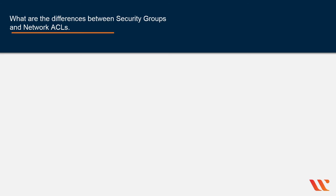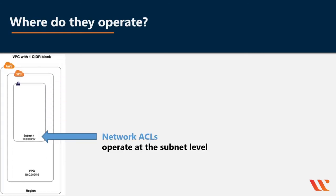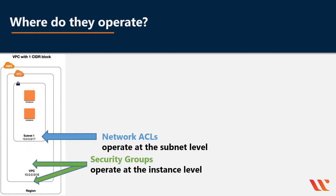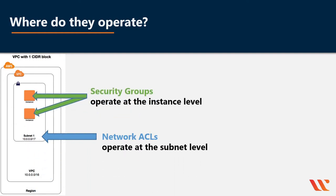The first thing to get firmly in your mind is where these virtual firewalls operate. In the case of network ACLs, they operate at the subnet level. In the case of security groups, they operate at the individual instance level.